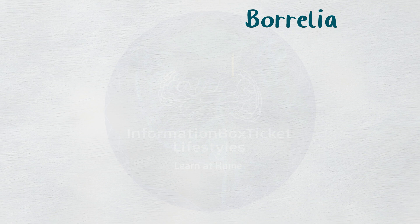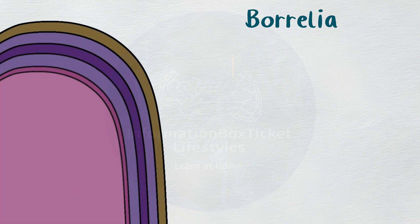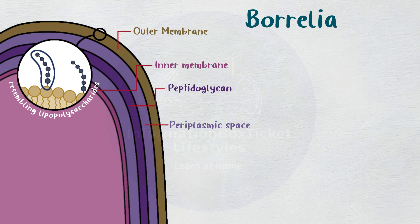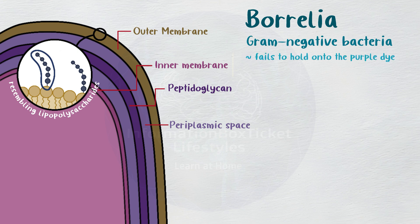Every species of Borrelia has three membranes: an inner membrane, an outer membrane that includes a substance resembling lipopolysaccharides, and a layer of peptidoglycan in the periplasmic space, which is the area between the inner and outer membranes. Gram-negative bacteria are defined as having a thin peptidoglycan coating that fails to hold on to the purple dye used in gram staining.